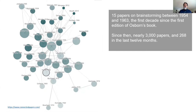In the 15 years after the publication of that book there were 15 papers — 15 studies on brainstorming — and then since then there have been 3,000 papers, nearly 300 in the last 12 months.